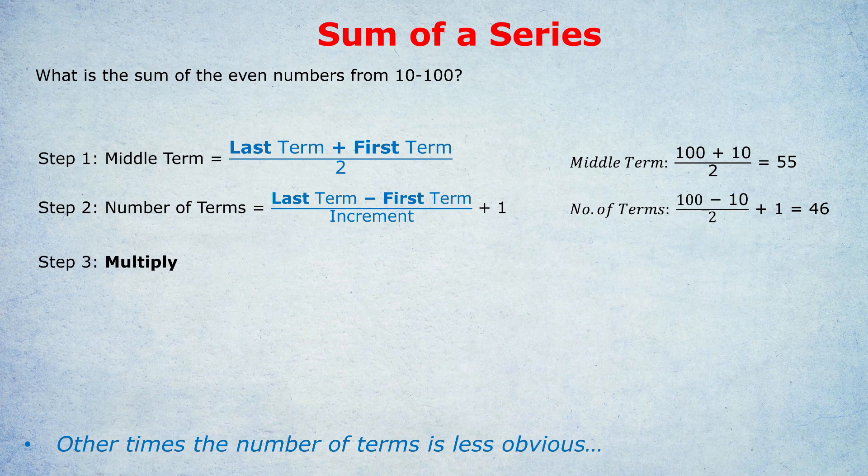Either way, step 3 is always to multiply 55 times 46 is 2,530. And that is the sum of all the even numbers from 10 to 100.